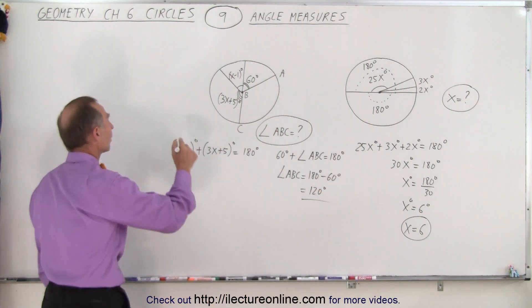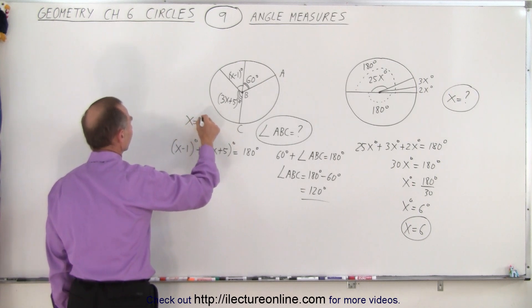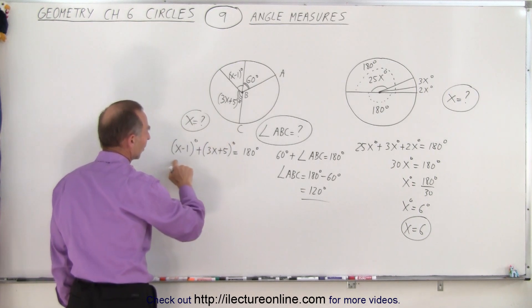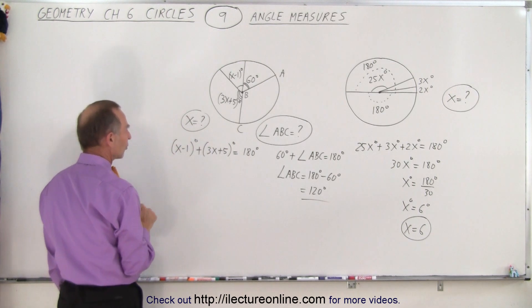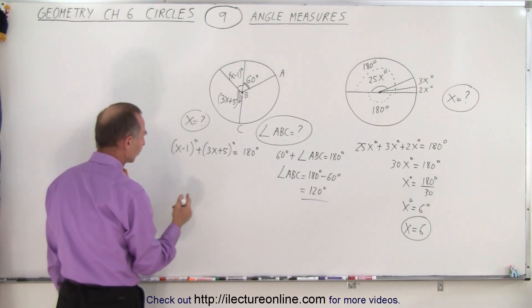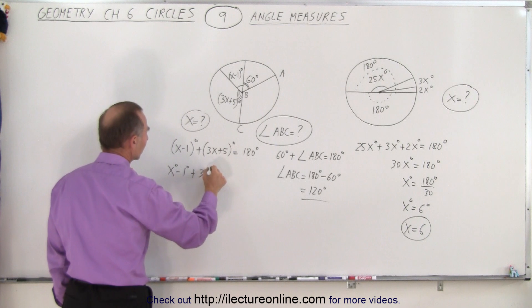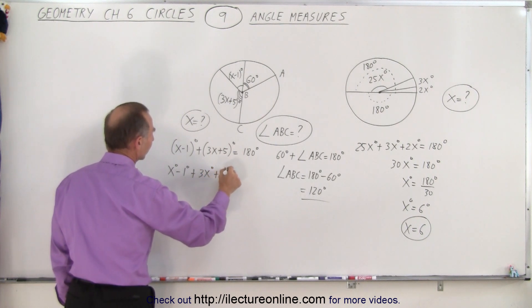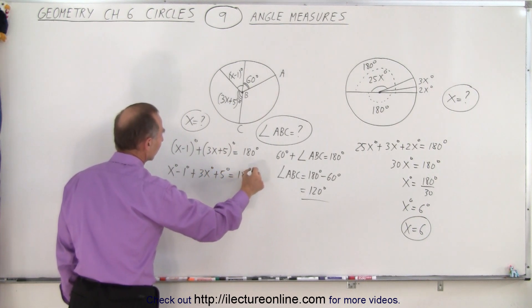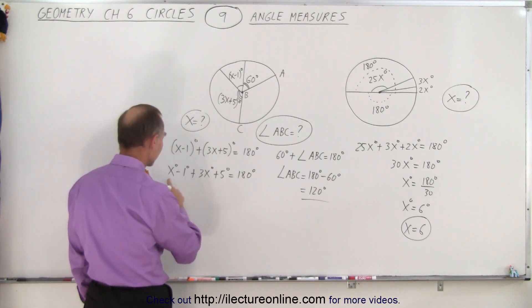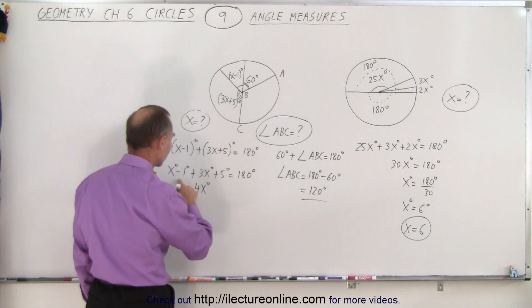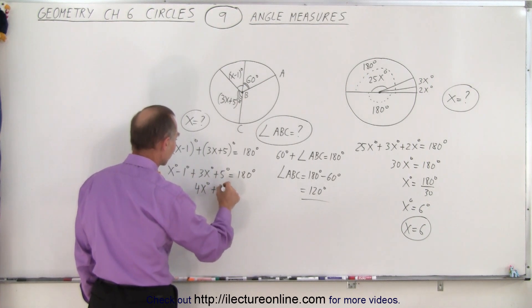However, what if they also want to find the value for x? Well then we have to solve this side, this equation right here for the left side of the circle. So the first thing we're going to do is separate these out. So we have x degrees minus 1 degree plus 3x degrees plus 5 degrees equals 180 degrees.